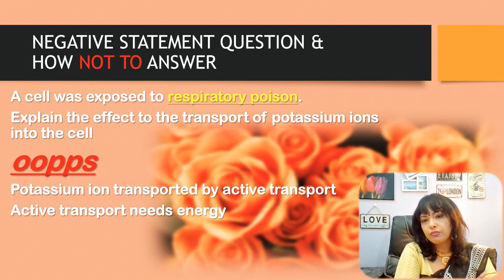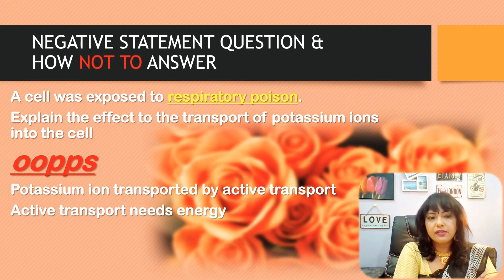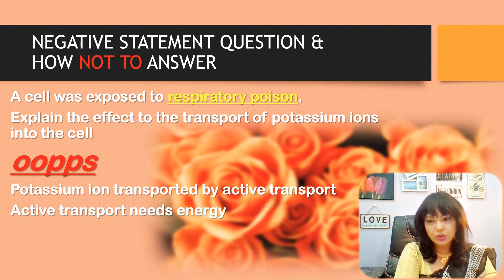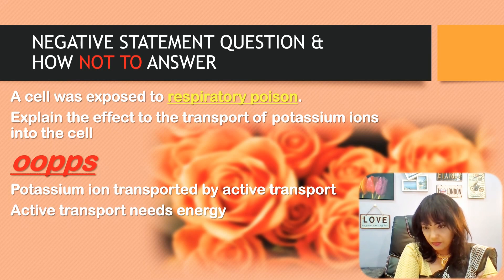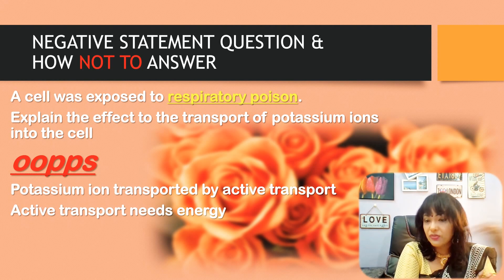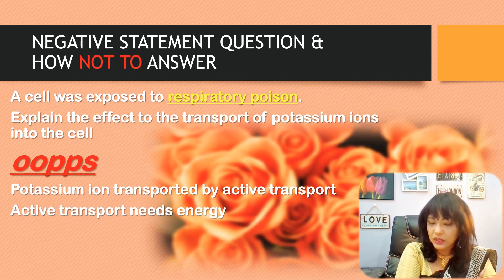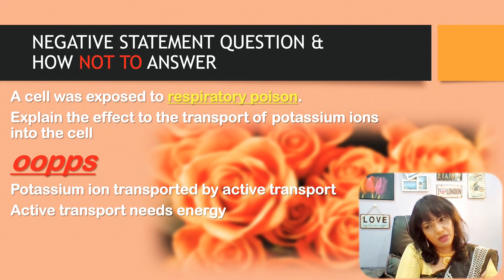The question asks: explain the effect on the transport of potassium ions into the cell. The oops answer is: potassium ion is transported by active transport; active transport uses energy. Factually it's a beautiful answer, but technically it's wrong. It's not always about giving correct facts — if your technique is wrong, you do not satisfy the question and you are not entitled to marks.